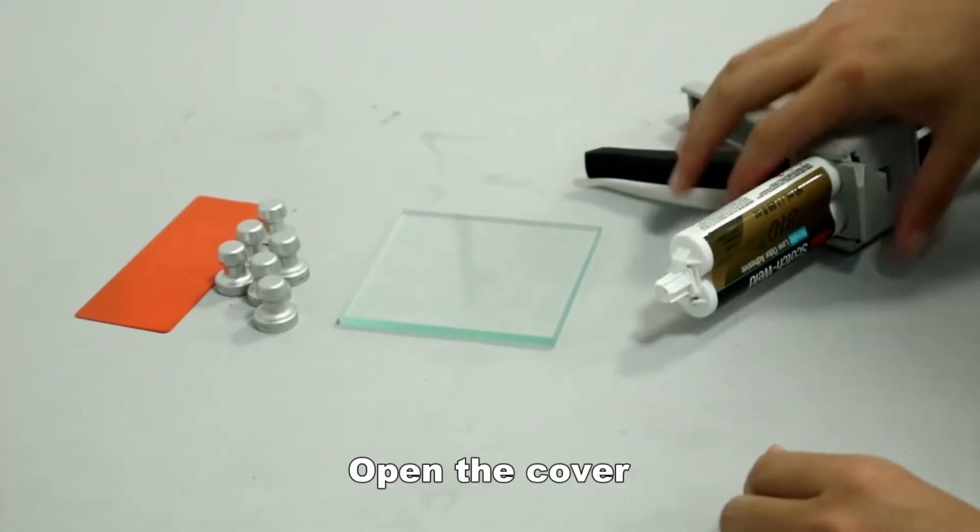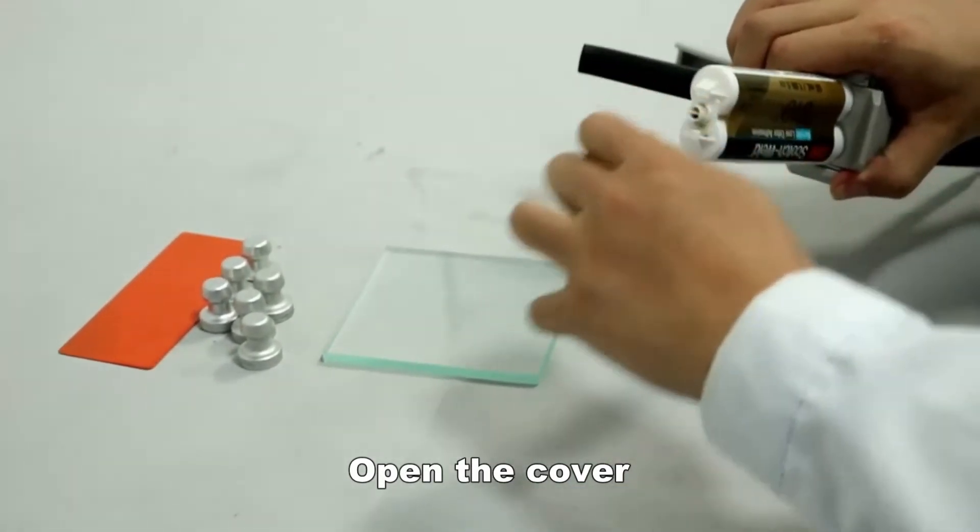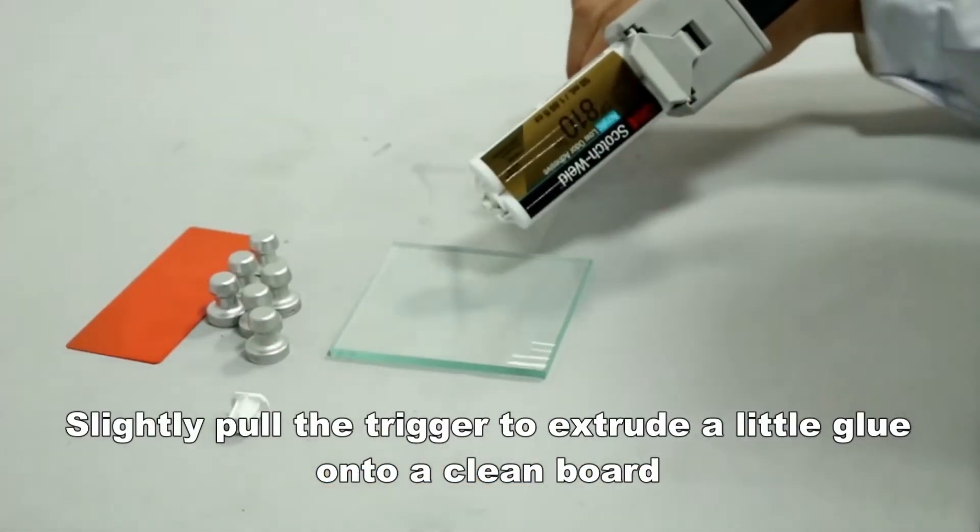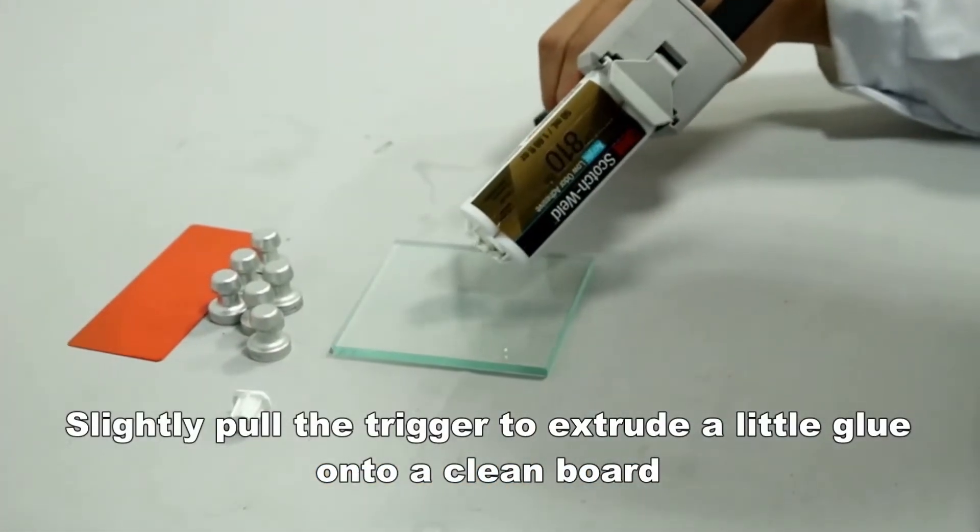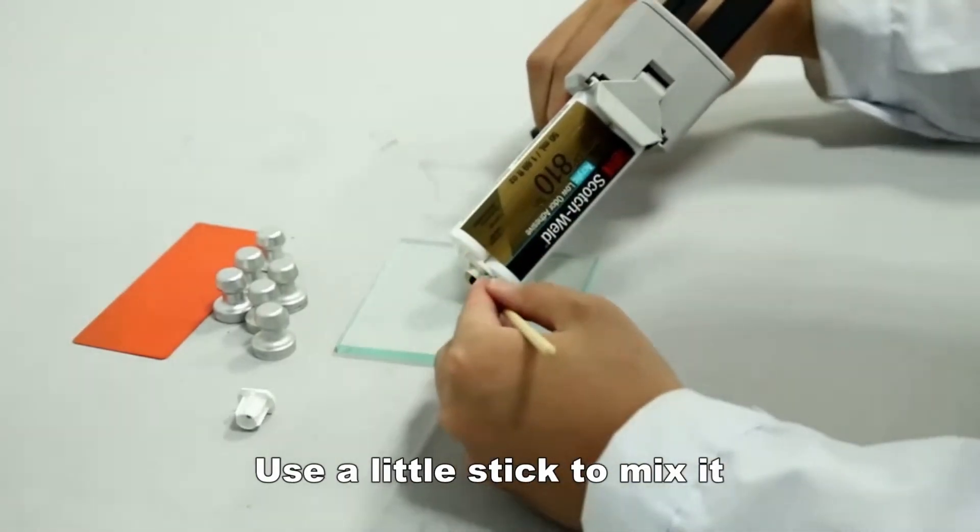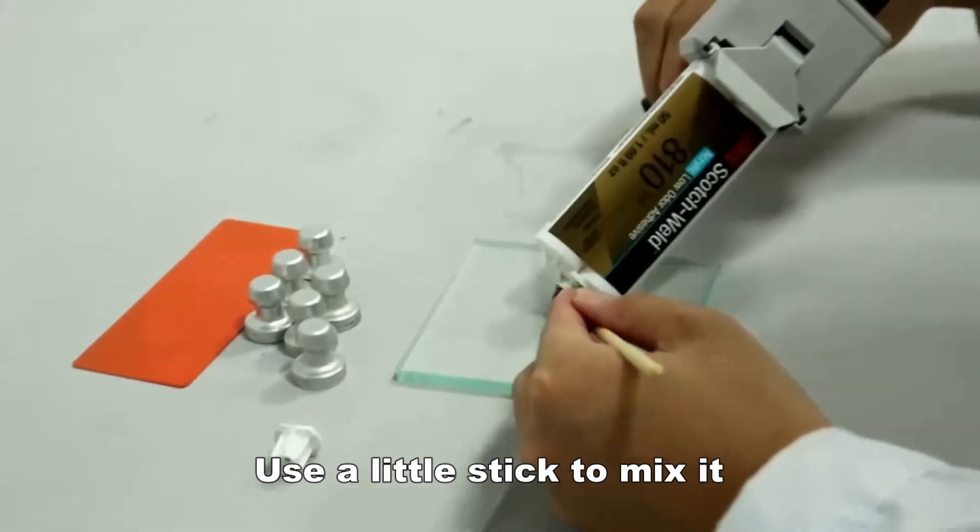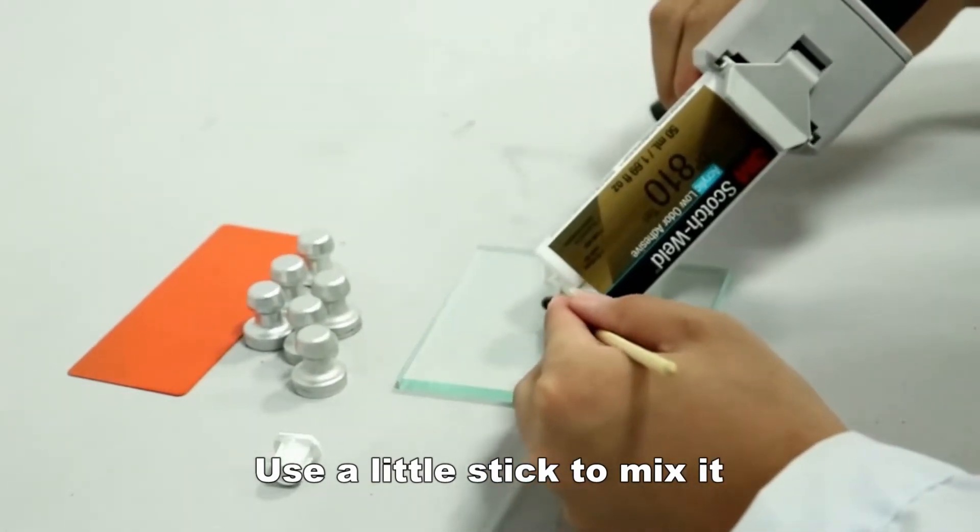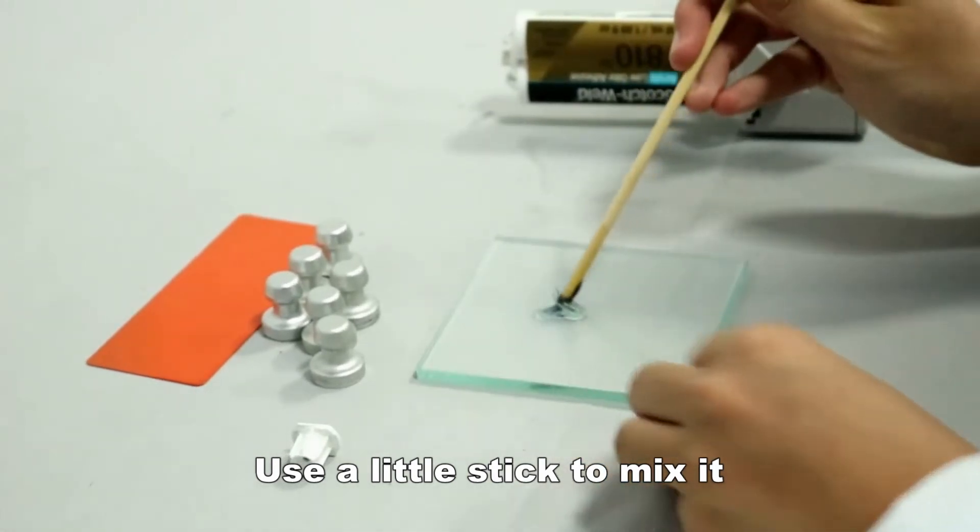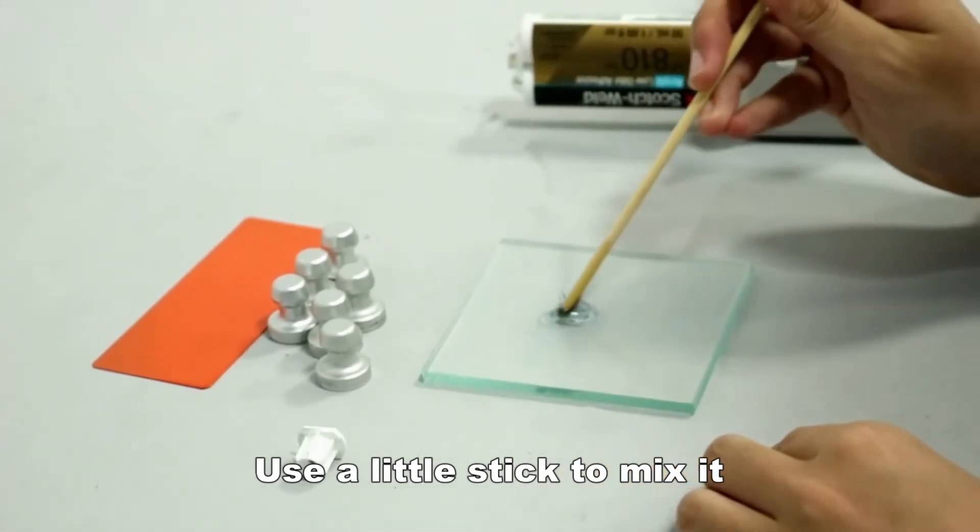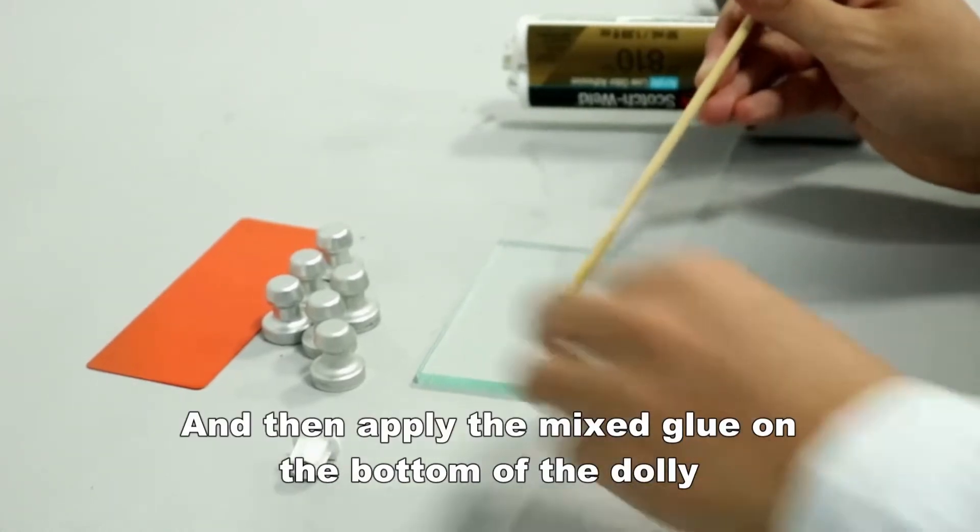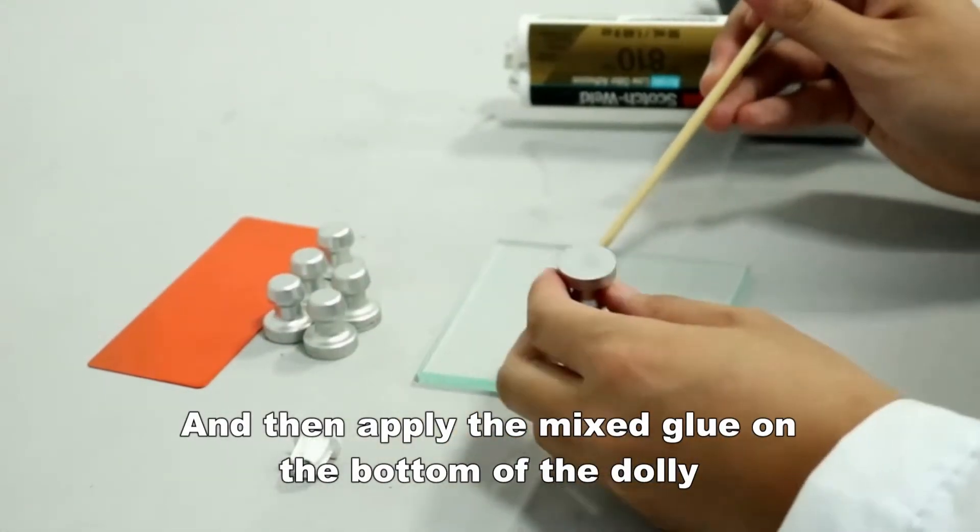Apply the glue. Open the cover. Slightly pull the trigger to extrude a little glue onto a clean board. Use a little stick to mix it, and then apply the mixed glue on the bottom of the dolly.